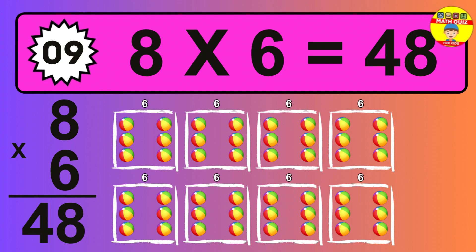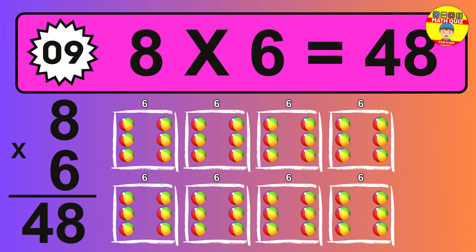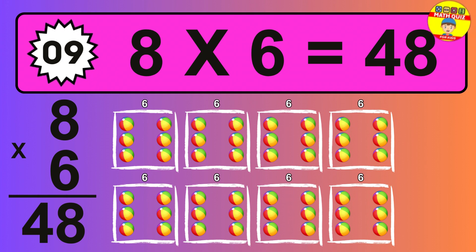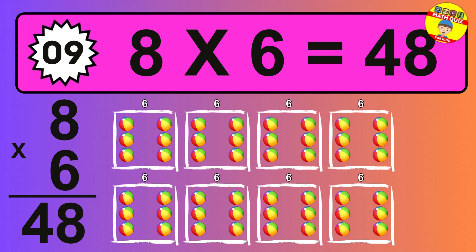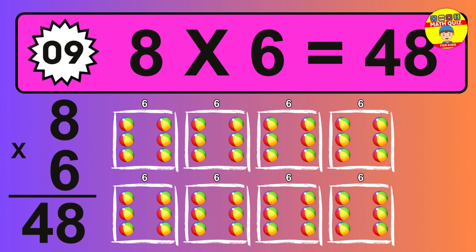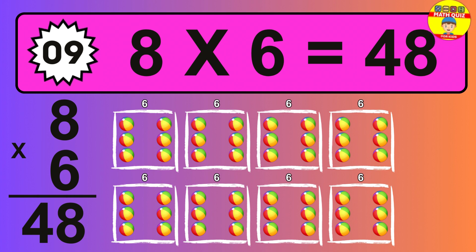To calculate, we have eight groups with six balls each one. So how many balls do we have? 48 balls.